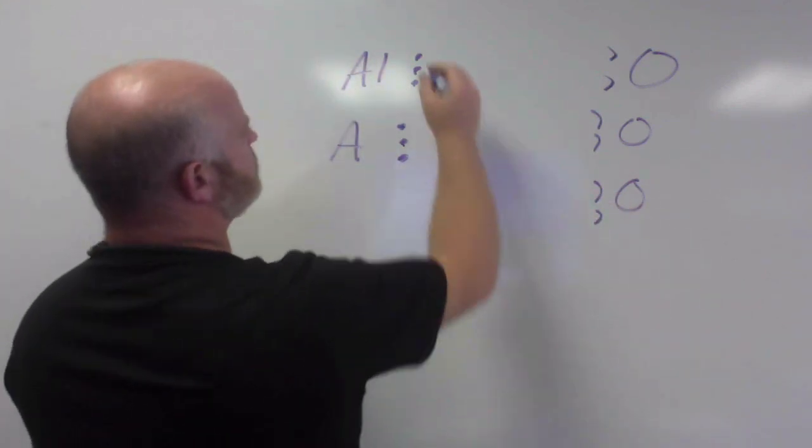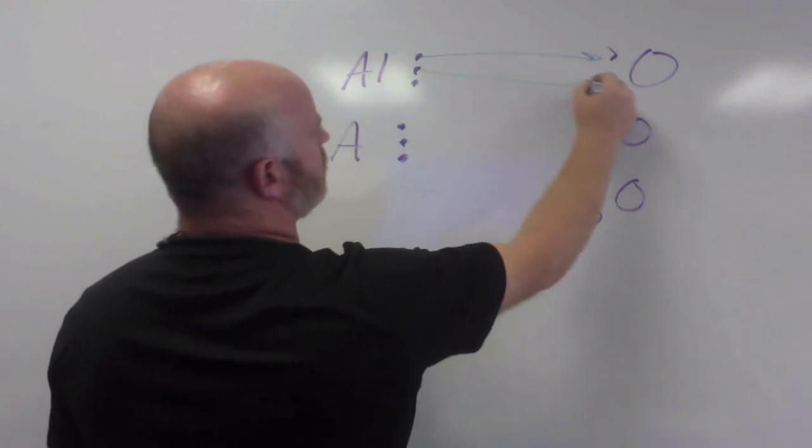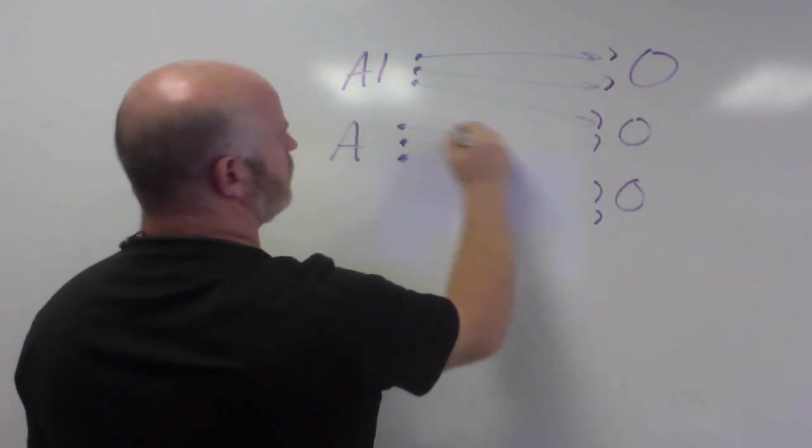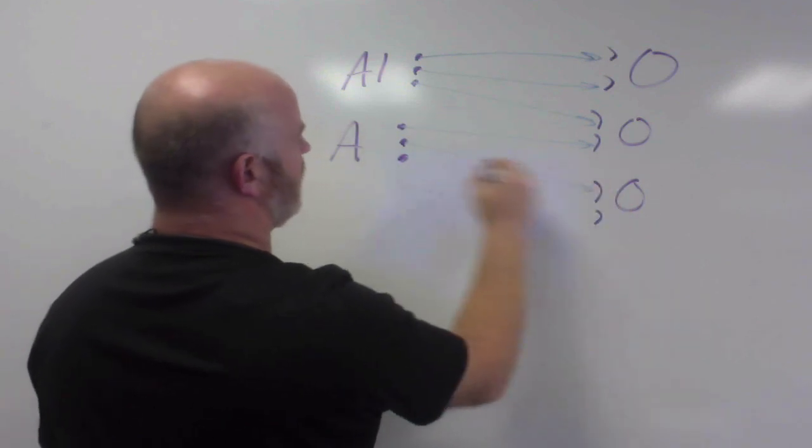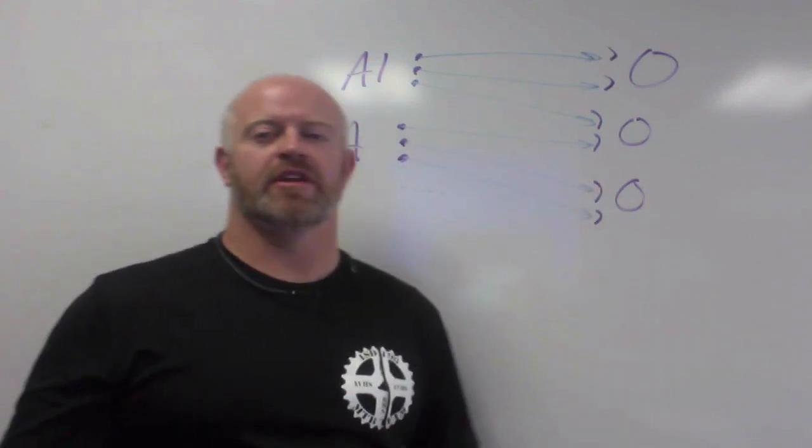it takes three of them to make this work. So, what happens is the aluminum, they can donate one, two, three, four, five, six.